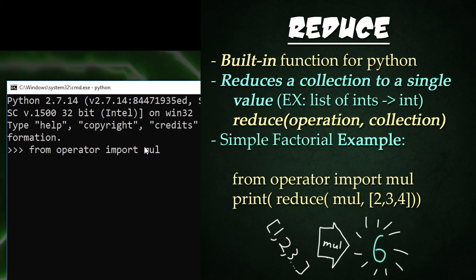All right, so we're going to start off by importing mul from the operator module. This is so we can get the product of an entire list. Then we're going to print out the reduced value of multiplying all the values within it together.